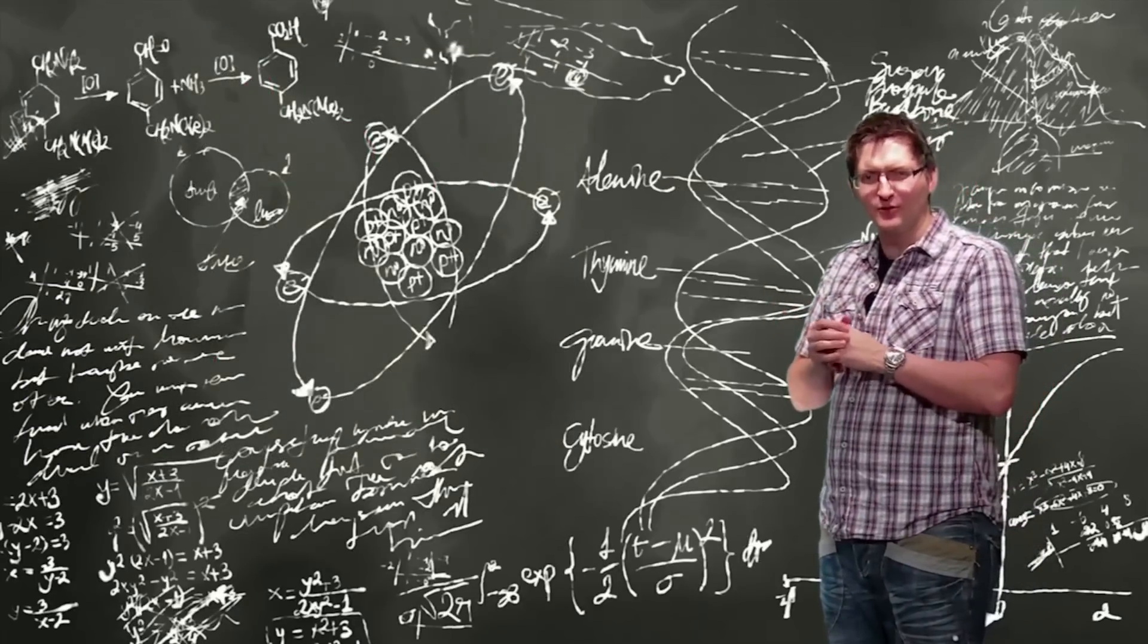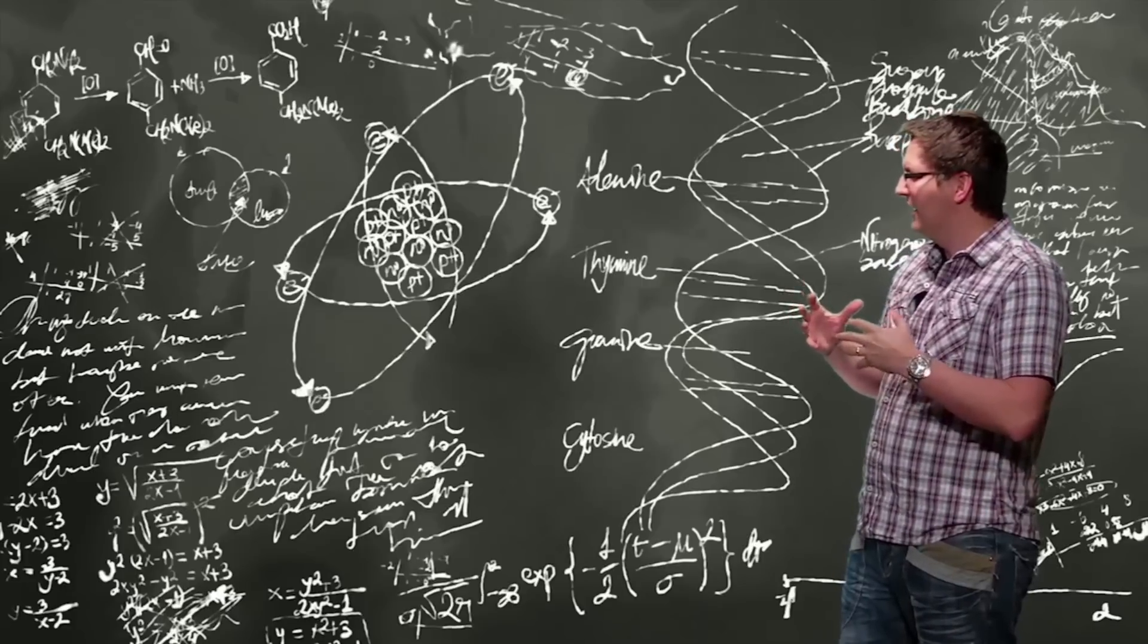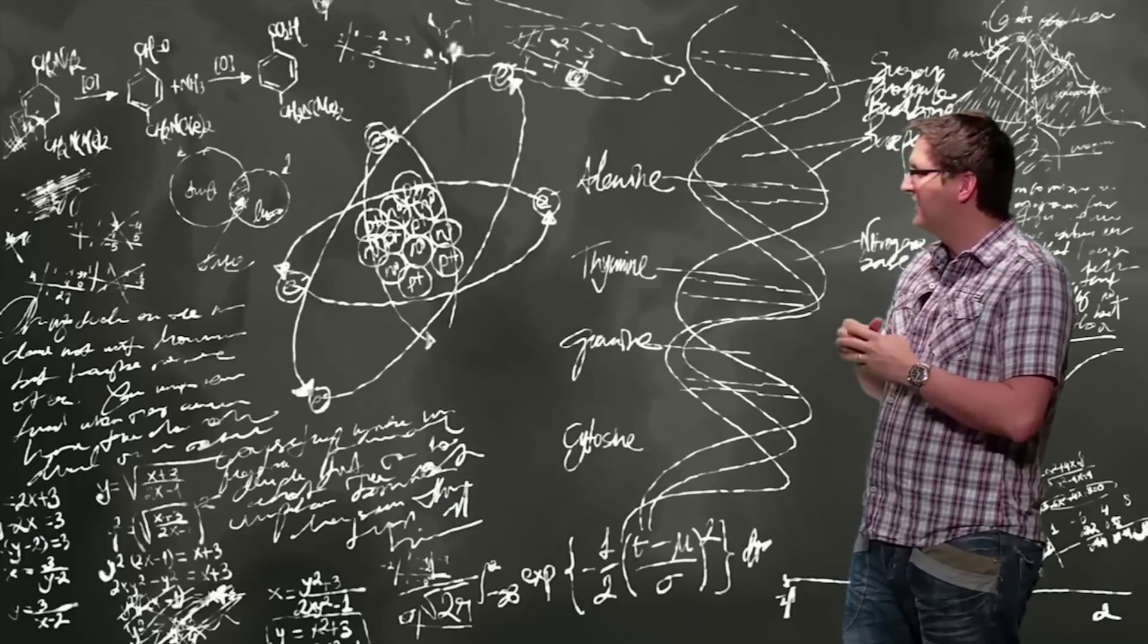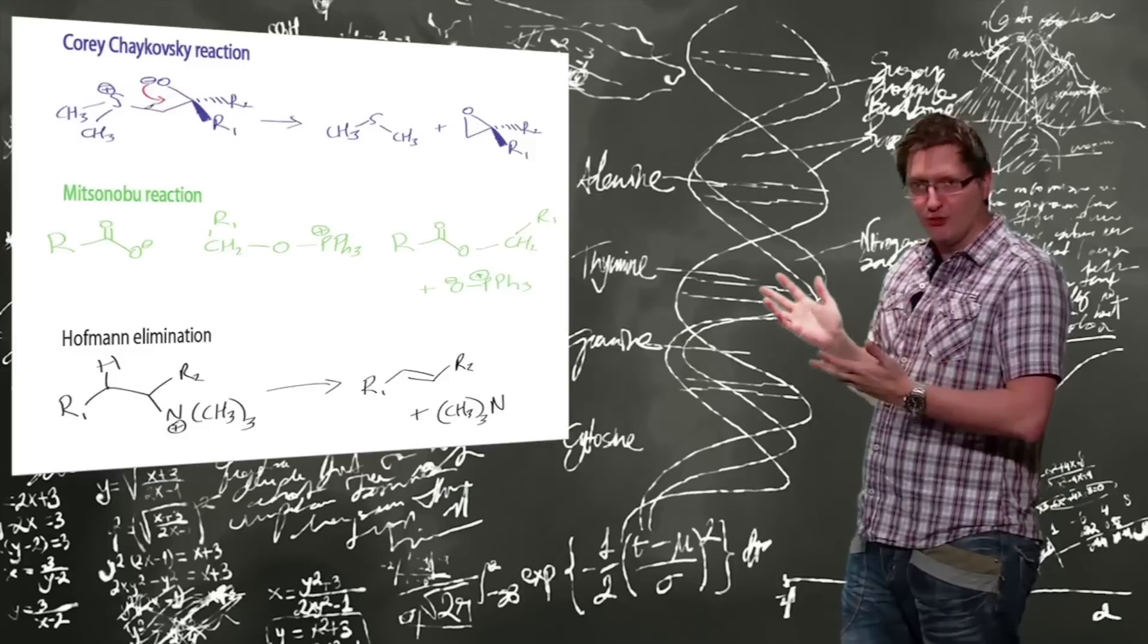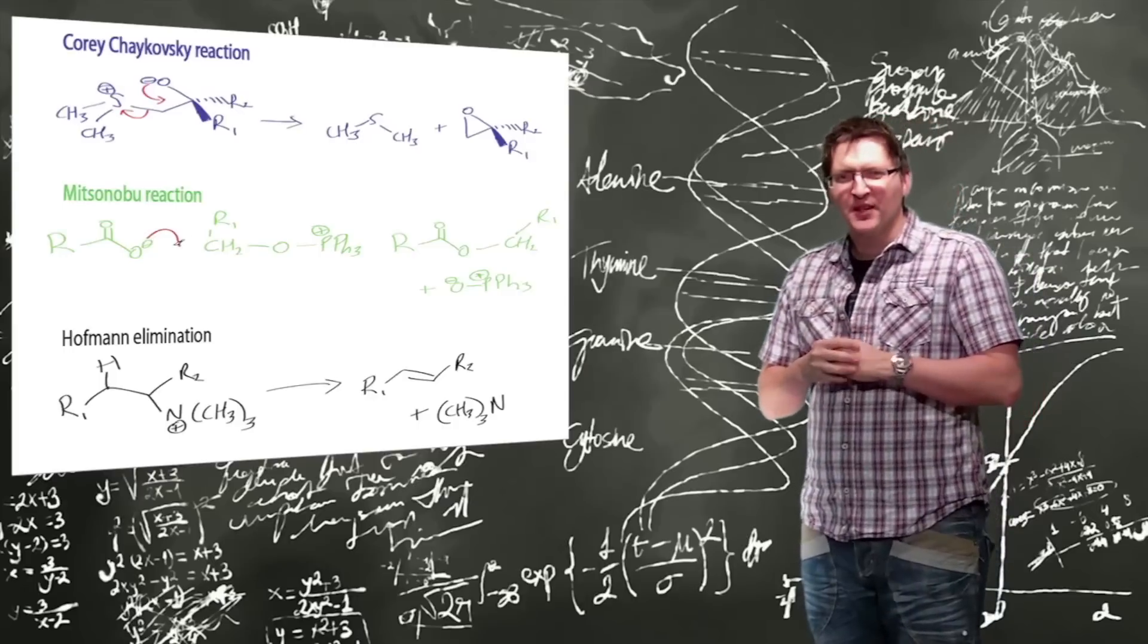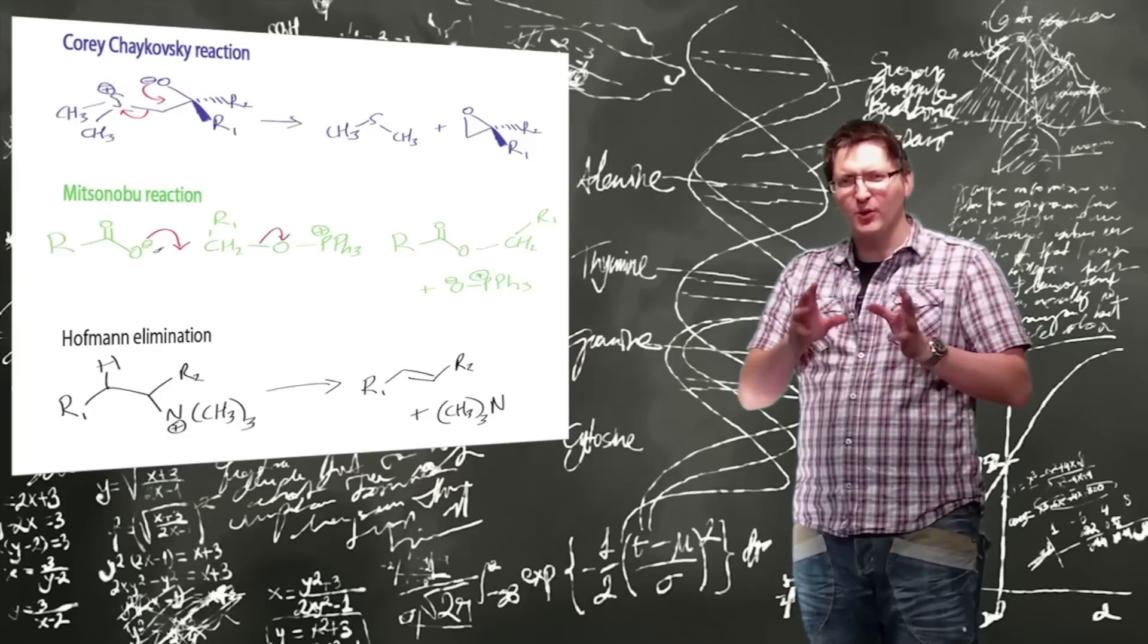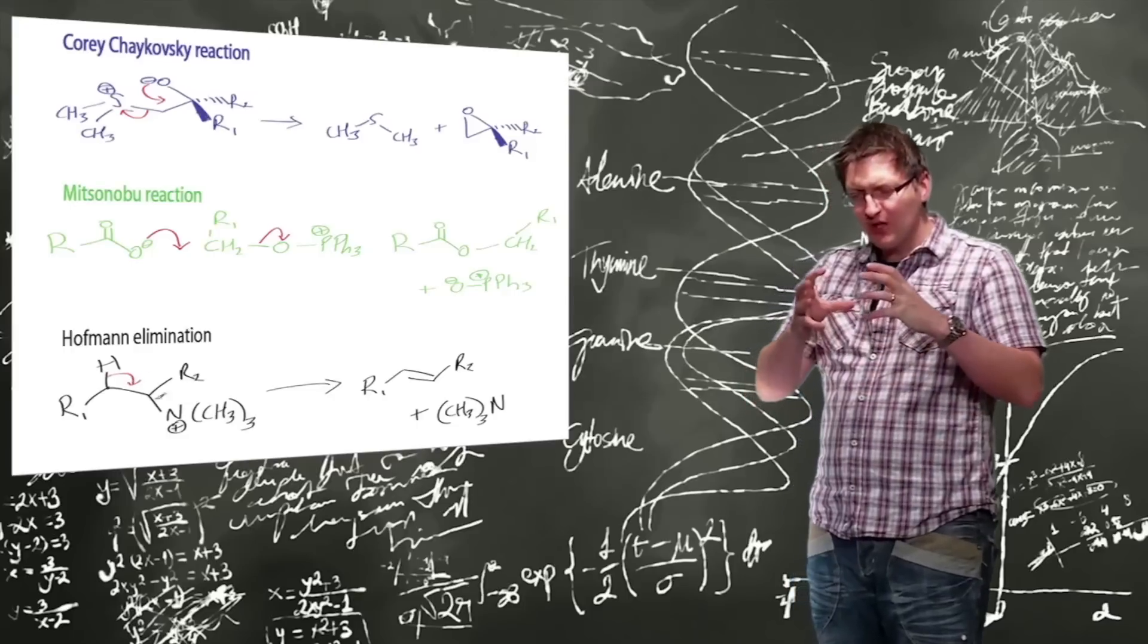Other examples where you've got reactions involving charged species are things like the Corey-Chaykovsky reaction here, the Mitson-Albu reaction, and the Hoffman elimination to give you amines. That's basically it apart from one more example.